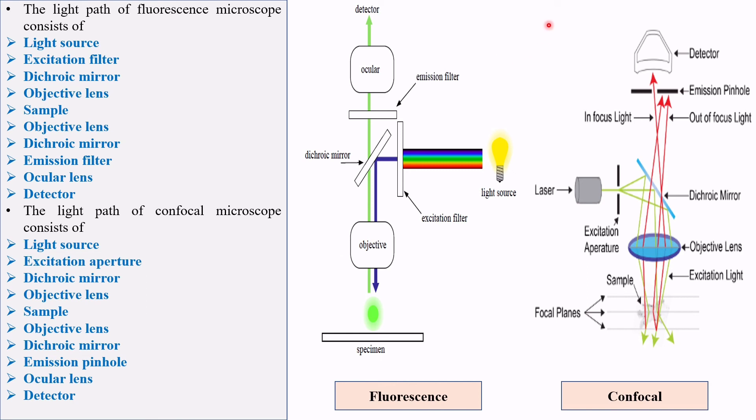Ultimately, in both cases the emitted light is focused to the detector by the ocular lens. Detector detects the fluorescence and we can see the beautiful fluorescence image.